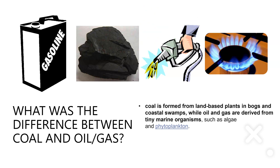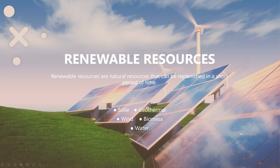So what is the difference between coal and oil and gas? Coal is formed from land-based plants in bogs and coastal swamps, whereas oil and gas come from tiny marine organisms underneath the ocean — things like algae and phytoplankton found in the ocean.